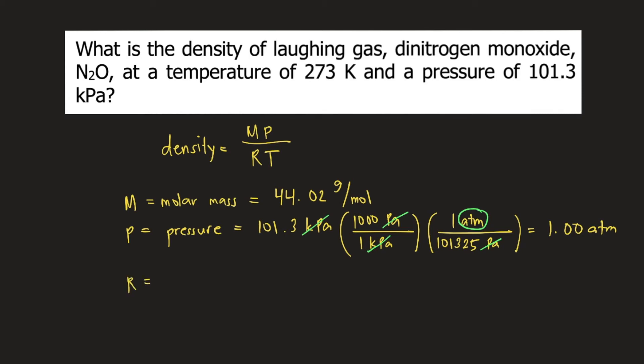R is the gas constant, 0.0821 litre atmosphere per mole kelvin. You should be familiar with the value of the gas constant. And T is temperature. The unit must be in kelvin. We are given 273 kelvin.